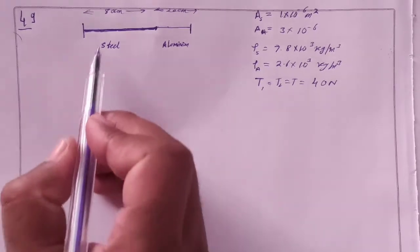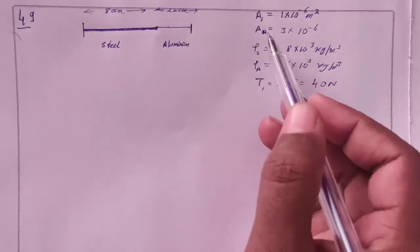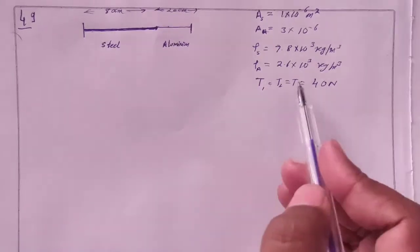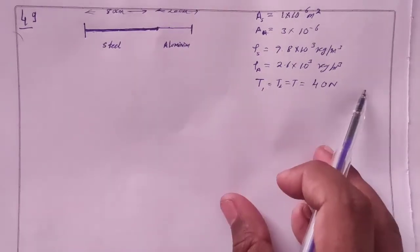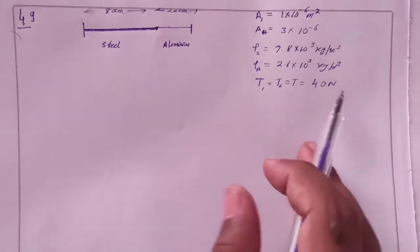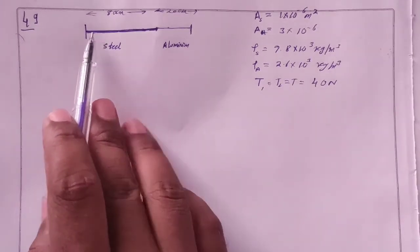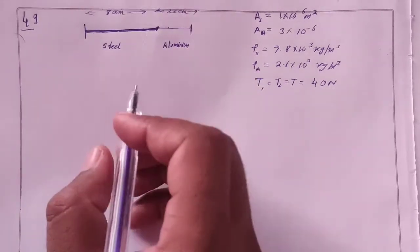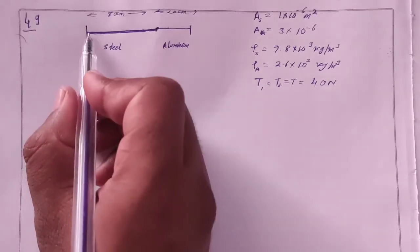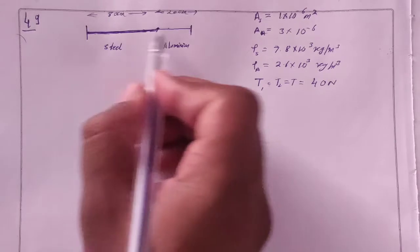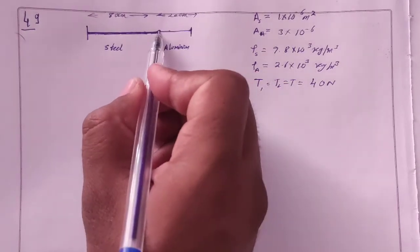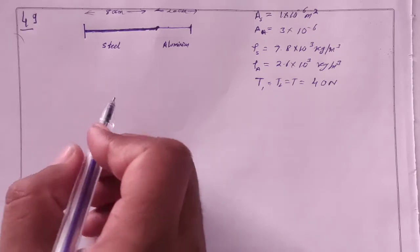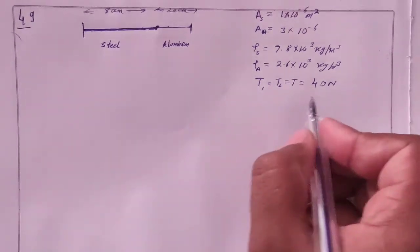So here we have two wires, one steel wire, one aluminum wire, area of cross-section given, density given and tension both the same which is 40 N. And what do we call tuning fork? The frequency at which standing wave forms and the condition is a node forms. The node is at the joint. The other ends are also nodes. The three nodes are fixed. Now, what could be the minimum frequency?